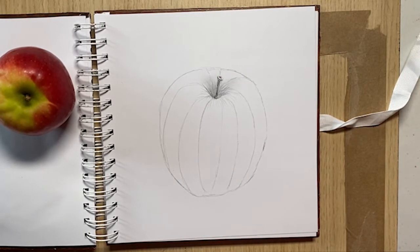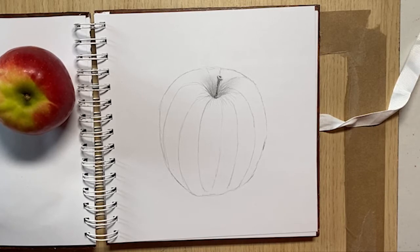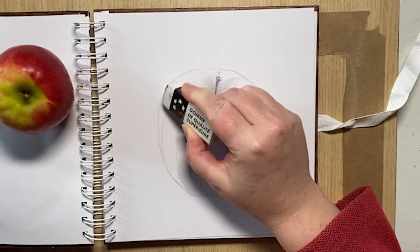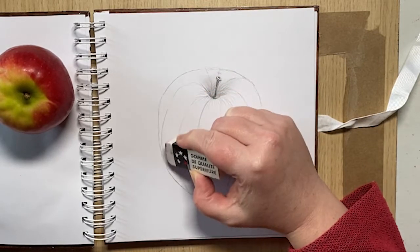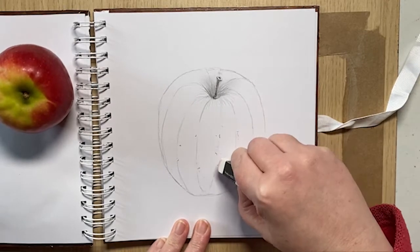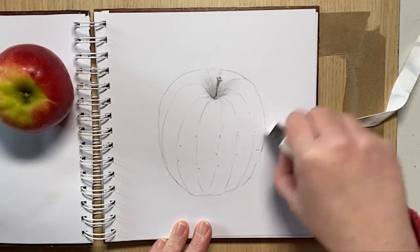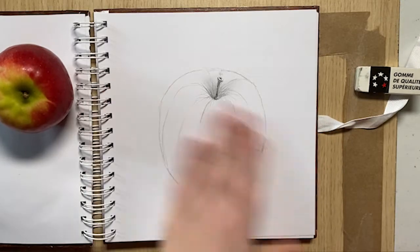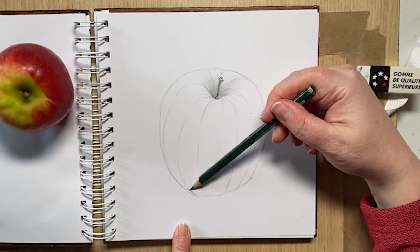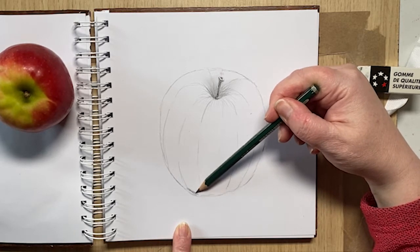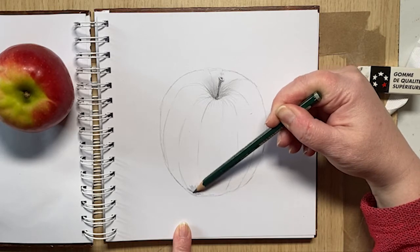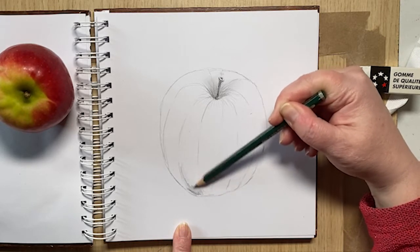These lines you don't necessarily have to keep. They're just sort of giving you some guidance as to where all your shading is going to be. So I'm just going to break them up a bit, those lines, so they don't look like lines, but I can still use them as guidelines. This time I'm going to come in from the bottom.